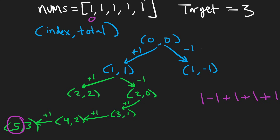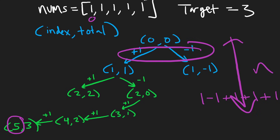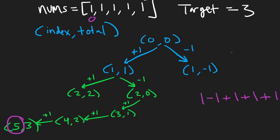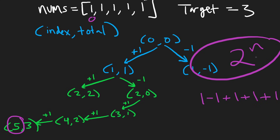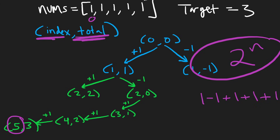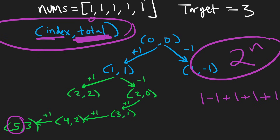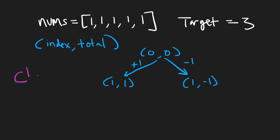This is the brute force. This tree could have a height of n, and we obviously have two branches each time — two different paths for every single node. So that puts the time complexity at O(2^n). How can we optimize this? The trick is going to be in the parameters that we're passing into our recursive function: the index we're maintaining, and the total sum we have as well. Using these, we can optimize this solution using caching, as with most dynamic programming problems.